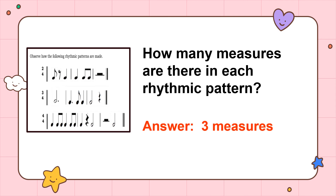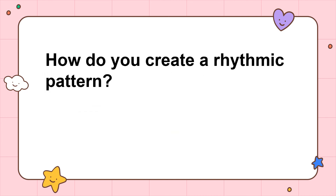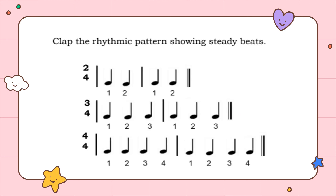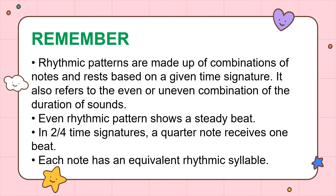How many measures are there in each rhythmic pattern? The answer is three measures. How do you create a rhythmic pattern? A rhythmic pattern is created by combining notes and rests based on a time signature. This is a guide illustration on how you can clap the rhythmic pattern showing steady beats. Tips to remember: rhythmic patterns are made up of combinations of notes and rests based on a given time signature.